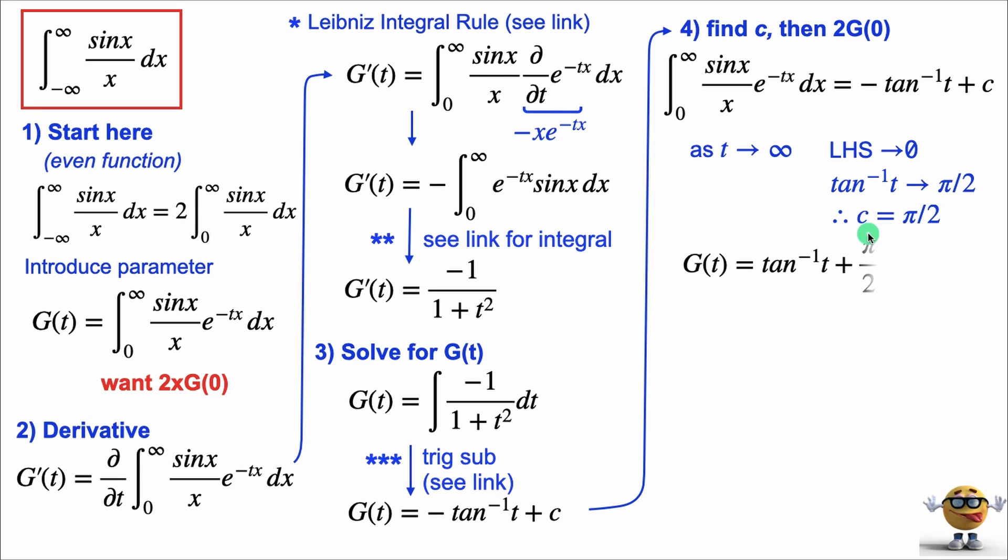So now that we know the integration constant, proudly, we have our g of t. It's the negative arctan of t plus pi over 2. We want g of 0. So g of 0 is when t is 0. Arctan of 0 is 0. So g of 0 is pi over 2. And my friends, our integral, 2g of 0 is pi. And that's it in all its glory.